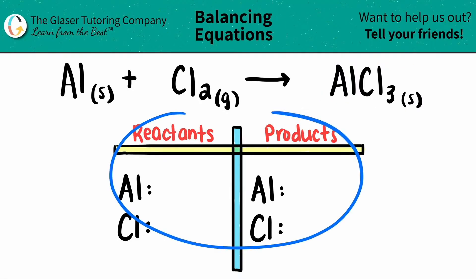I already wrote down a chart for us, for our left and our right side, as well as the elements that I see that are on both the left and the right side, the reactants and the products. So all we have to do is just start numbering how many we have, and then we'll start balancing.